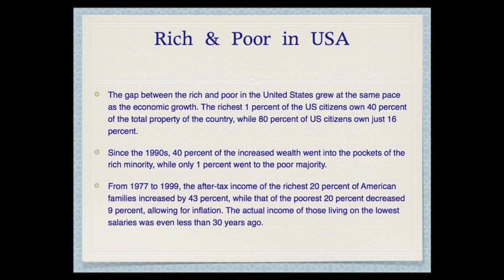Here in our own country, in the U.S., the gap is also changing. The gap between the rich and poor grows at about the same pace as economic growth. The richest 1% in this country now own 40% of the total property, while 80% of citizens own just 16%. Since the 90s, 40% of the increase in wealth went to the pockets of the rich minority 1%, while only 1% of that went to the 80% poor majority. From 1977 to 1999, the after-tax income of the richest 20% of American families increased by 43%, while the poorest 20% decreased by 9%, allowing for inflation. So the actual income of poor Americans is decreasing compared to 30 years ago, while the wealthy are accumulating more and more of both income and wealth.